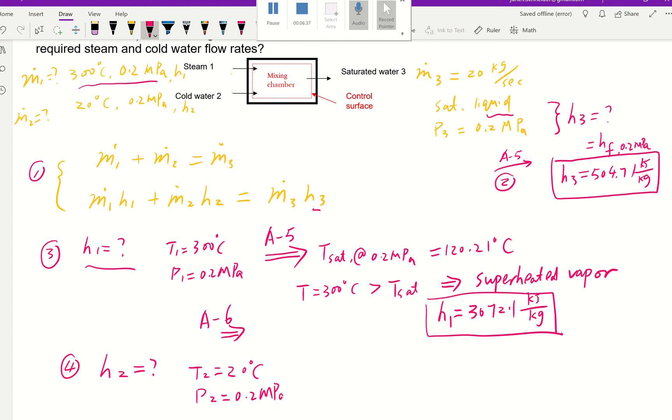h₂, we also know two properties: T₂ is 20°C and pressure is 0.2 MPa. Well, we already know this T₂ of 20°C is way less than the saturated temperature we found previously, it's 120.21°C at the same pressure of 0.2 MPa. That tells us this is going to be compressed liquid or subcooled liquid.